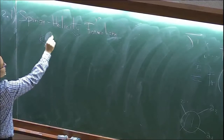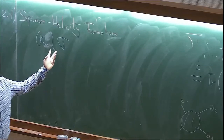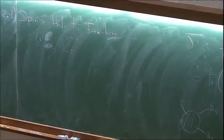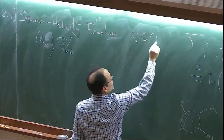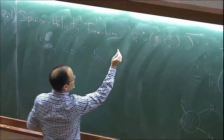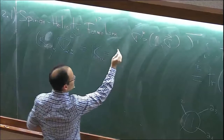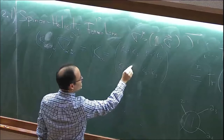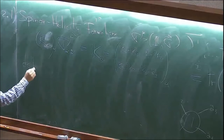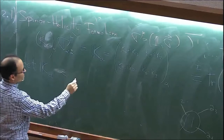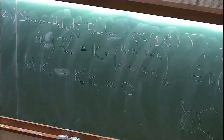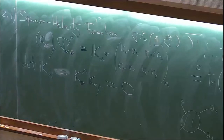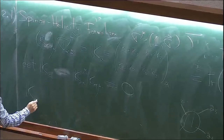Let's try to find new variables that completely trivialize the on-shell condition. In four dimensions, we can replace the vector representation by a spinor representation using the Pauli matrices. The momentum vector k^mu becomes a two-by-two matrix by contracting with the Pauli matrices sigma. The determinant of this matrix is proportional to the norm of the vector.